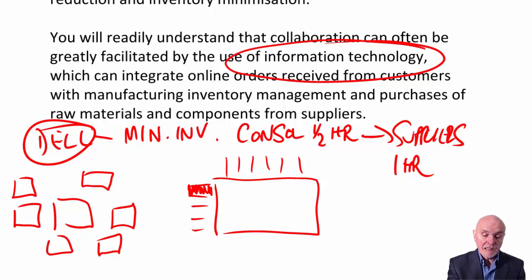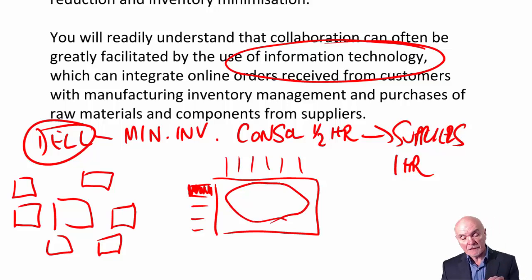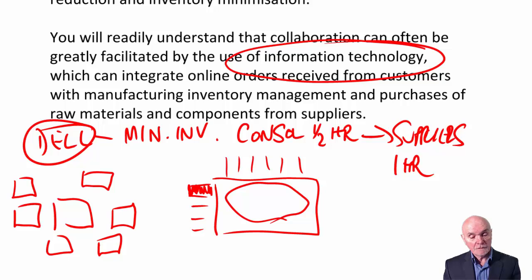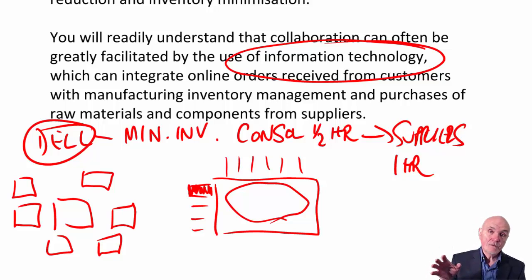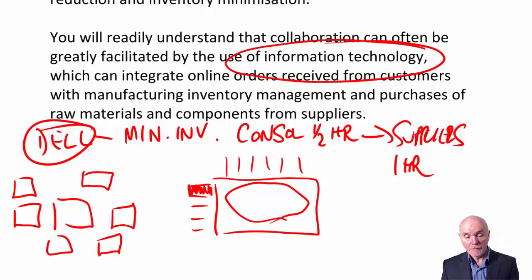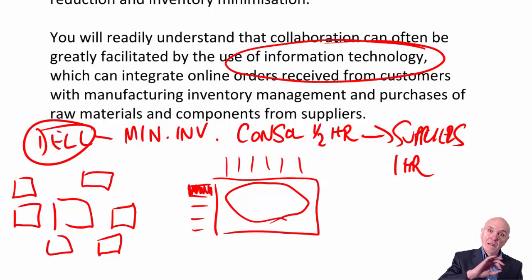The only inventory in the factory was work in progress — goods being made. At the end of manufacturing, they would turn on the computers, let them run for an hour or two for testing, then immediately dispatch them to customers. So the only inventory they had was work in progress, goods on test, and goods in the process of being delivered to customers.